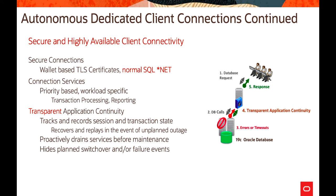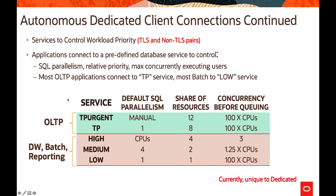Transparent Application Continuity is supported and is important — it can track and record sessions and transaction state, recover and replay in the event of any unplanned outage, and proactively drain services before maintenance or planned switchover or failover events. On Autonomous Dedicated, services are used to control workload priorities.